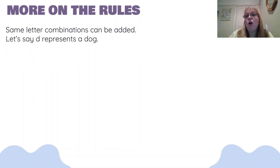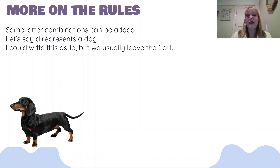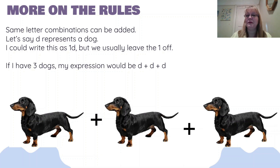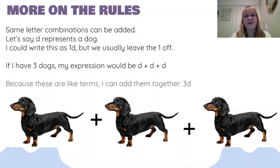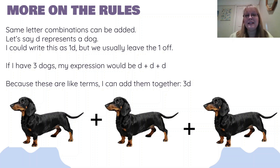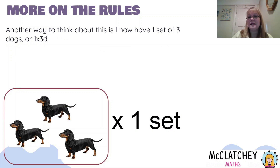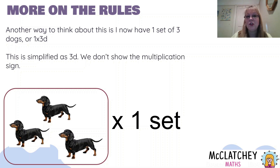The same letter combinations can be added. Let's think about D, representing a very cute dachshund. I could write that as one D because I've got one dog, but we usually leave the one off when writing algebra — you just write D. If I had three dogs, I've got D plus D plus D, which is three Ds, three dogs altogether. So I can write that as 3D. I don't write three plus D because the whole number three is like a number written on a piece of paper, and that would be reintroducing something that wasn't there. Another way of thinking about it: I've got one set of three dogs, which is three times D — three lots of dogs.